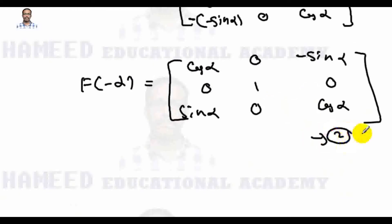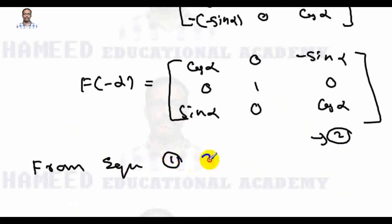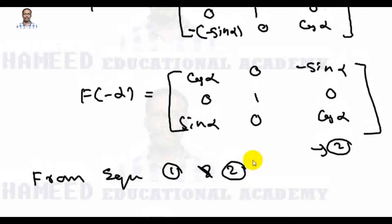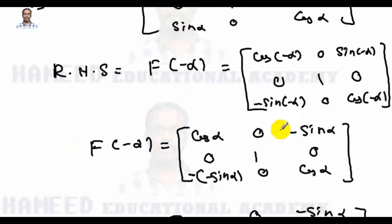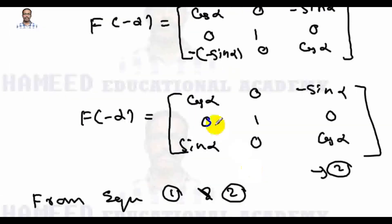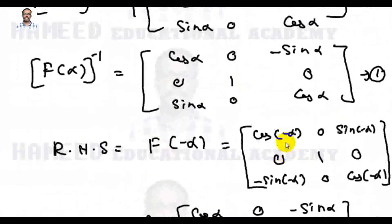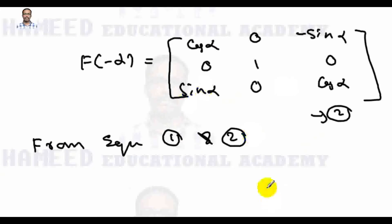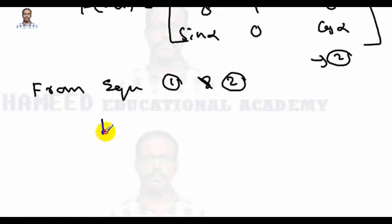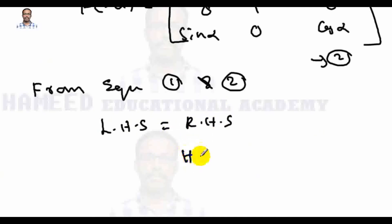From equation 1 and equation 2, the left-hand side equals the right-hand side. Therefore f(α) inverse equals f(-α), and the proof is complete.